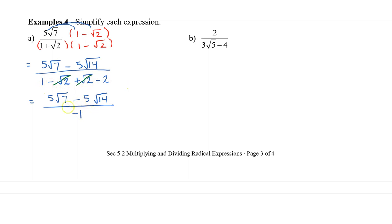We don't want a negative 1 in the denominator, so I'm going to divide each term in the numerator by −1. That gives −5√7, and then −5√14 divided by −1 gives +5√14. So the final answer is −5√7 + 5√14.